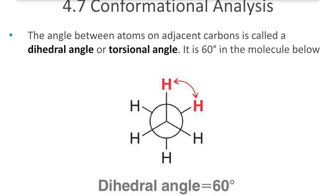Now let's see why some conformations of molecules are higher energy than other conformations. The angle between atoms on adjacent carbons is called a dihedral angle or a torsional angle. In this case, the angle between these two hydrogens shown in red is 60 degrees. So we've got a hydrogen connected to the front carbon, then the front carbon is connected to the back carbon, then the back carbon has this hydrogen on it. Let's look at that side on.